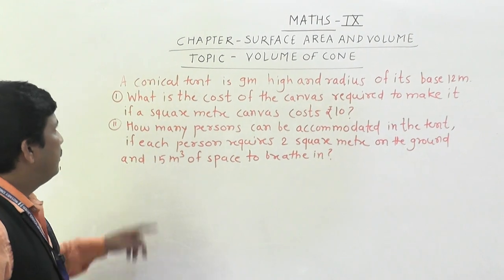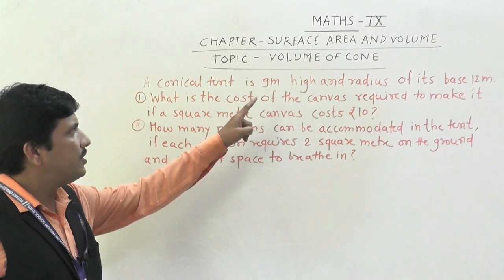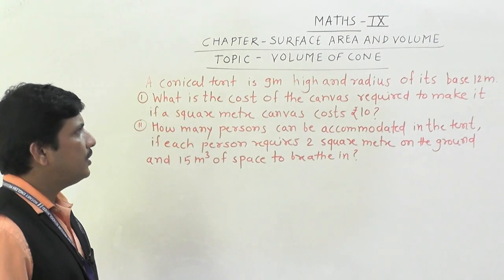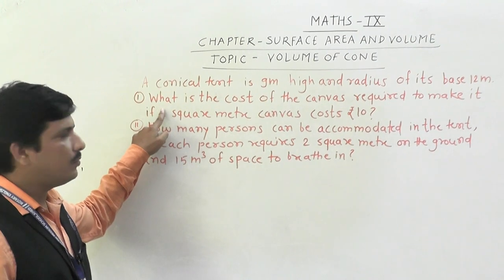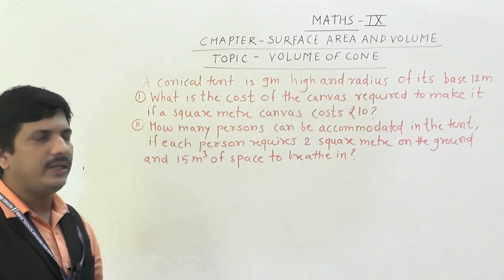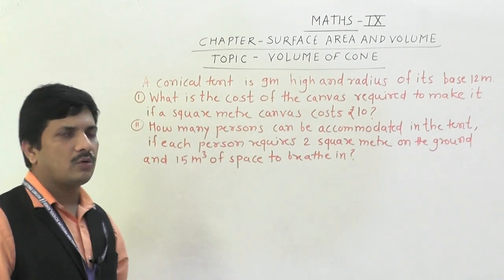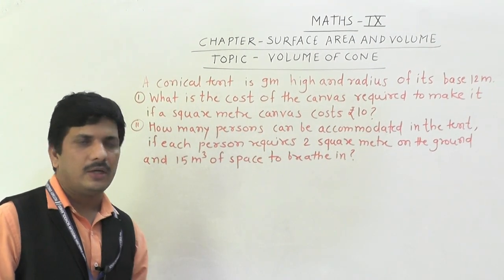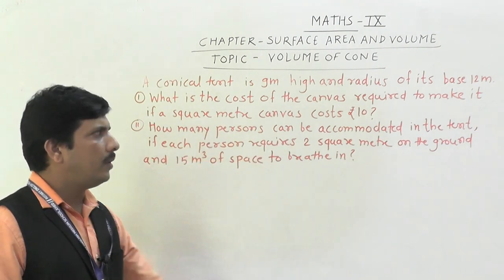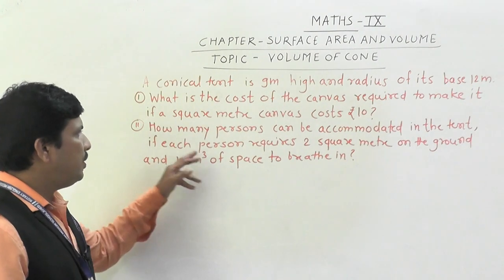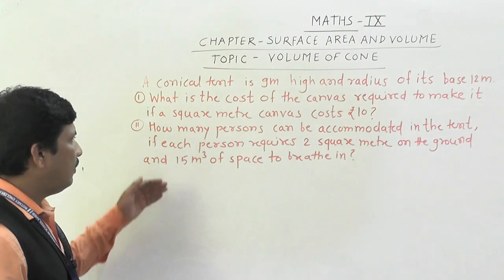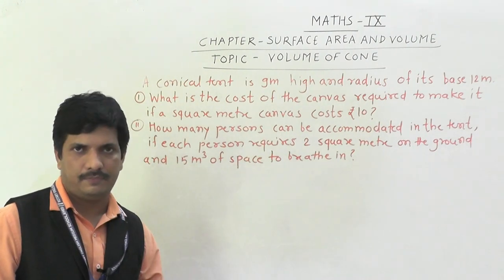Our second problem: a conical tent is 9 meter high and the radius of its base is 12 meter. There are two questions. First: what is the cost of the canvas required to make it if one square meter canvas costs rupees 10? Second: how many persons can be accommodated in the tent if each person requires 2 square meter on the ground and 15 cubic meter of space to breathe in?